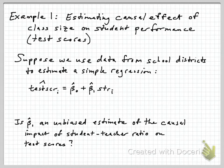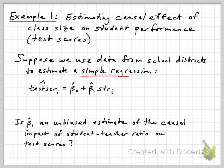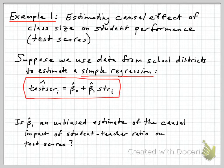Example 1 is the example used in the Stock and Watson textbook repeatedly. We're using data on California school districts to estimate the causal effect of class size on student performance, as measured by test scores. Suppose we're using a cross-section of school districts and we estimate a simple regression where the test score is the dependent variable — test score for district i — and it's a linear function of the student-teacher ratio, our measure of class size. We get estimates of the intercept and the slope, and the slope estimate is what we're really interested in: whether it is negative, as we'd expect if smaller class sizes are associated with better student performance.